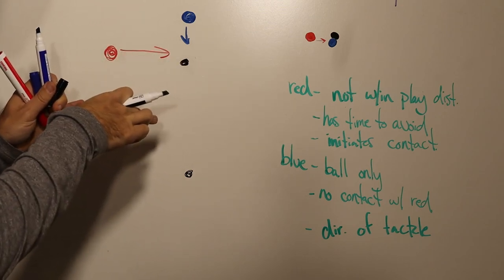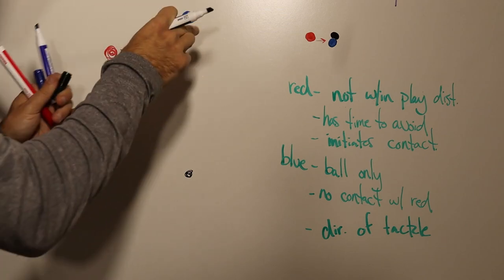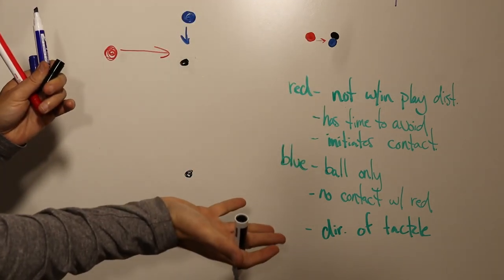Red is beat to the ball and then red continues his momentum forward and initiates contact with blue and falls over blue.